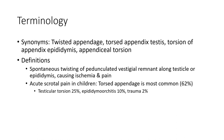The appendix testis is the most common site of torsion, around 62%. Testicular appendix accounts for around 25%, epididymitis 10%, and trauma 2%.